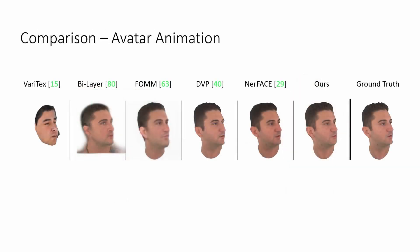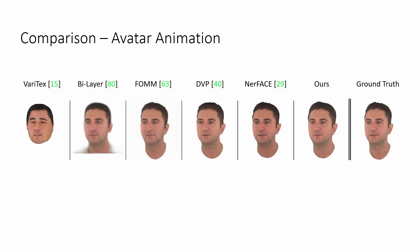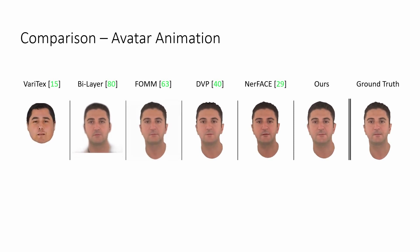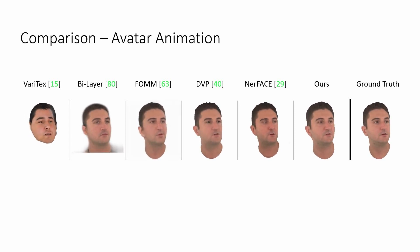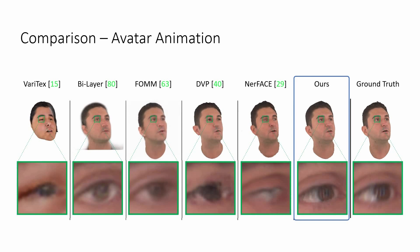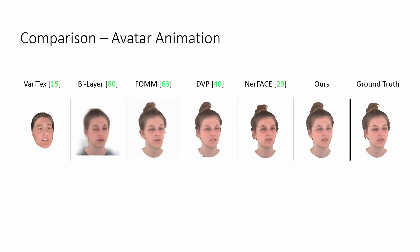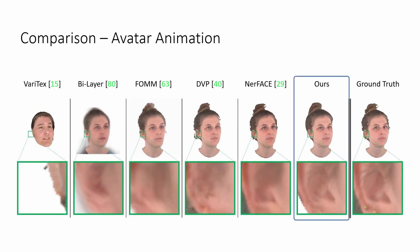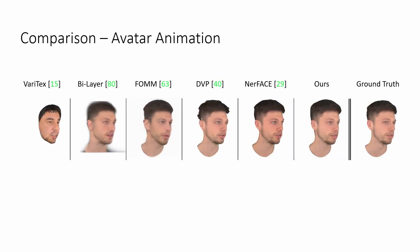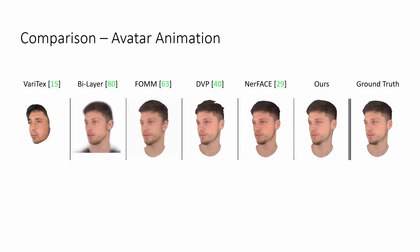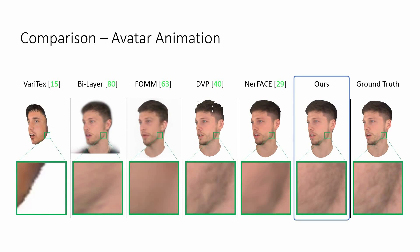We compare our method against state-of-the-art approaches for face and head animation. In terms of quality, the one-shot methods Varitext, Bilayer, and First-Order Motion Model either suffer from identity variations or deforming geometry for larger head rotations. Deep Video Portraits and NeRF Face are more robust in that respect, but still show large visible artefacts or lack of sharpness. In contrast, our avatars exhibit strong identity preservation, consistent geometry, and the sharpest texture details across all sequences among the competitors.